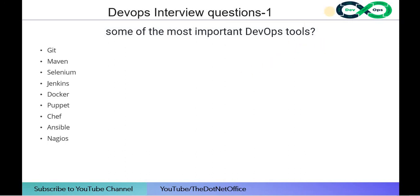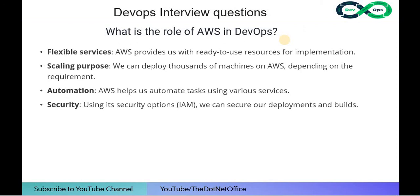AWS plays an important role in DevOps. AWS provides flexible, ready-to-use resources for implementation and scaling — you can deploy thousands of machines depending on requirements. AWS also helps automate tasks using various services, and provides security options like IAM to secure deployments. These cover the basic DevOps interview questions.